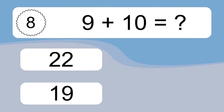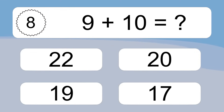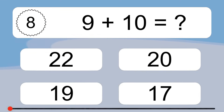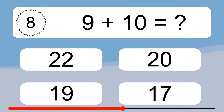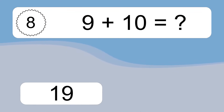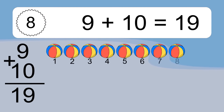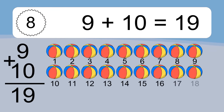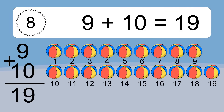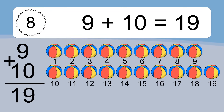9 plus 10 equals what? 9 plus 10 equals 19. Let's count it: 1, 2, 3, 4, 5, 6, 7, 8, 9, 10, 11, 12, 13, 14, 15, 16, 17, 18, 19.